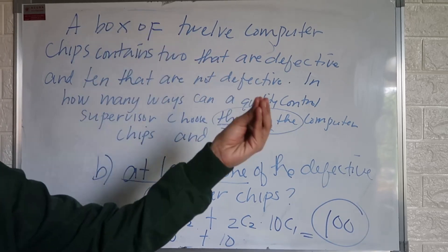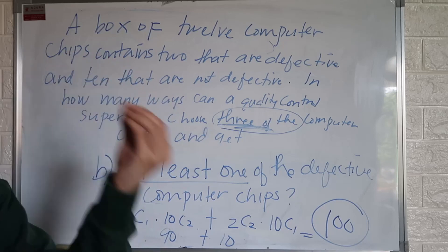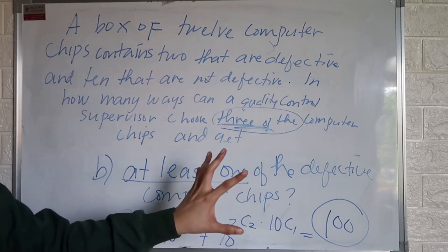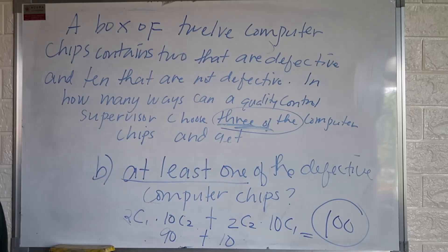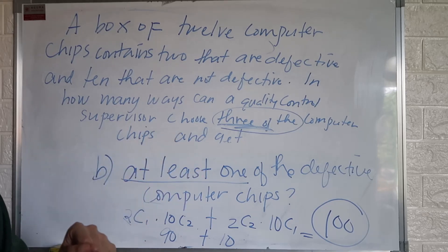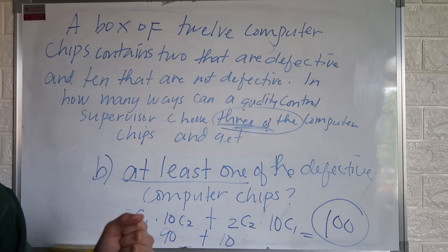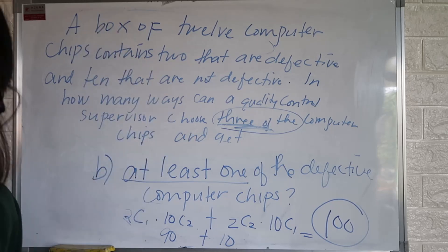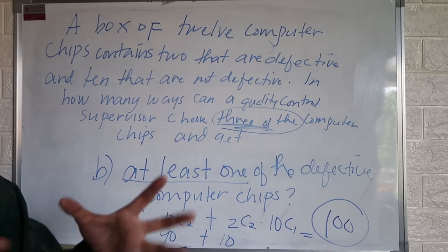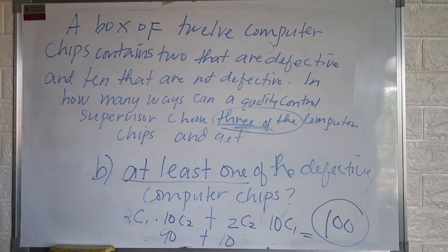That's combination. Again, when we say combination, the order of arrangement is not important. How do we know if the problem deals with combination? More or less, if the problem says it's a group — if it's a group problem, then we use combination. If you're talking about a group of people or things, that is combination, meaning you can select regardless of the arrangement.